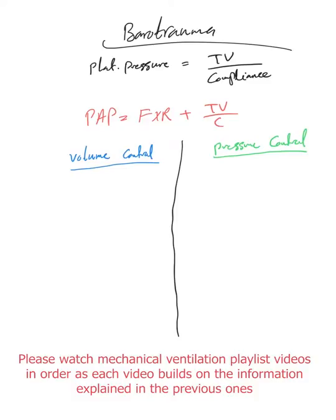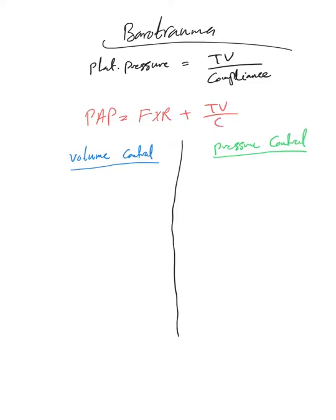Okay, let's finish on barotrauma. As you see now, barotrauma and volutrauma go hand in hand because barotrauma is mainly related to increased plateau pressure. This happens mainly at the alveolar level. Plateau pressure is equivalent to tidal volume, which we talked about in volutrauma, and compliance.